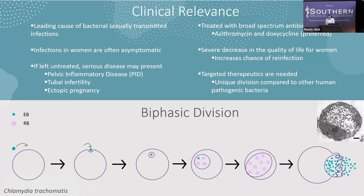In fact, about 20% of women treated for chlamydia make a follow-up doctor's appointment due to reinfection. Therefore, there's a need for therapeutics more specific to chlamydia so that this infection can properly be treated. Interestingly, chlamydia uniquely divides by budding, so we think the machinery used to achieve this type of division depends on unique proteins that could serve as specific therapeutic targets.